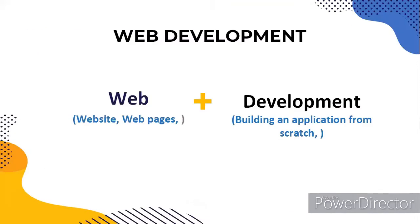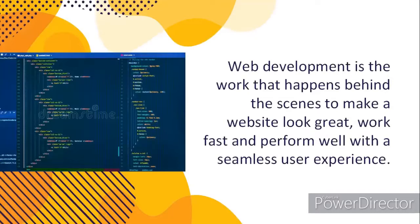The word web development is made up of two words: web, which refers to websites, web pages, or anything that works over the internet, and development, which is a process of building an application from scratch. Web development is the work that happens behind the scenes to make a website look great, work fast, and perform well with a seamless user experience.